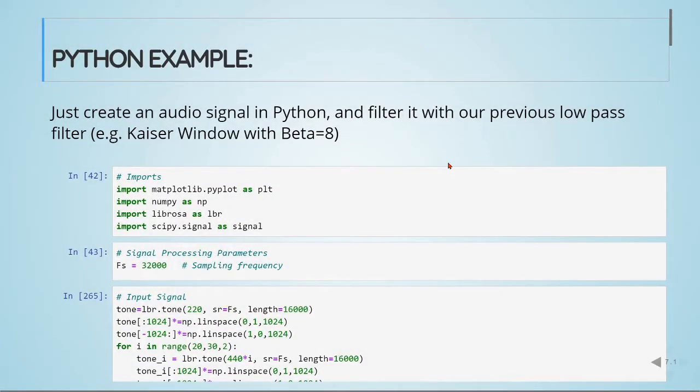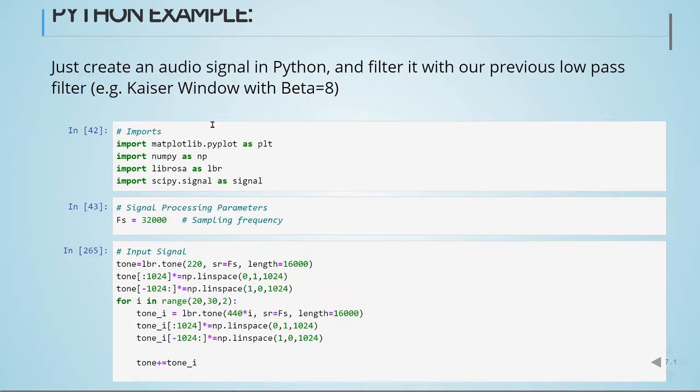In this example we'll create an audio signal in Python and then filter it with our previous low pass filter using the Kaiser window with beta equals to 8.